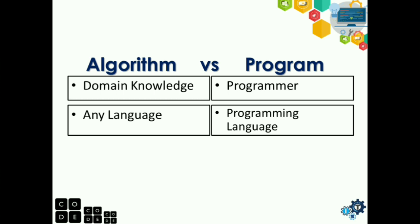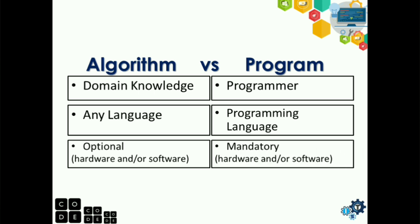For the hardware or software, for algorithm, hardware and software is an option. Anyone can write algorithm even without hardware or software. But hardware or software is mandatory needed in creating a program. Does it need to have a computer and other hardware devices and software when creating a program?